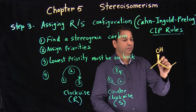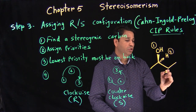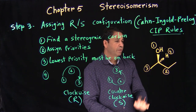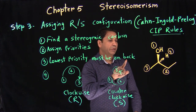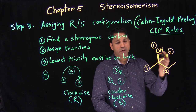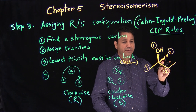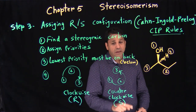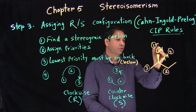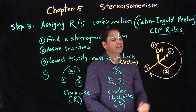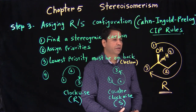In this example we did before: hydrogen is number four priority, this is number one priority, this is number two, and this is number three. The lowest priority is already on the back. So we connect one to two to three — we're going clockwise, so this is R. The configuration of this stereogenic carbon is R.